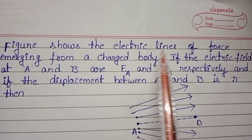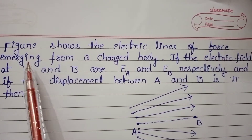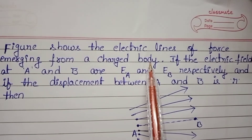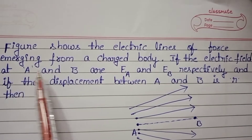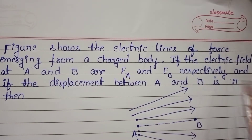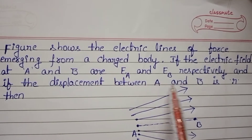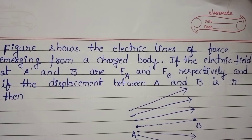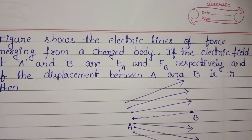The figure shows electric lines of force emerging from a charged body. If the electric field at points A and B are EA and EB respectively, and if the displacement between A and B is R, observe the given diagram.